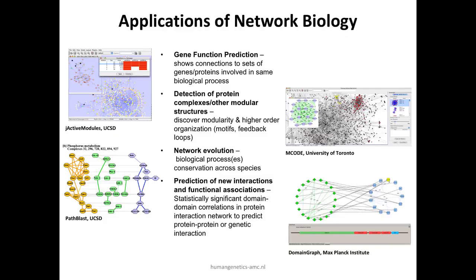People have spent almost 20 years — since around 1999 or 2000 — trying to figure out different ways to answer biological questions with these computer science algorithms. People have come up with all sorts of interesting types of network analysis over this time. Examples include gene function prediction, which we'll talk about tomorrow, and detection of protein complexes and other modular structures — useful if you have a network and are mapping protein interactions.